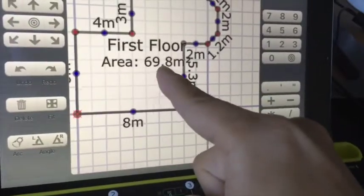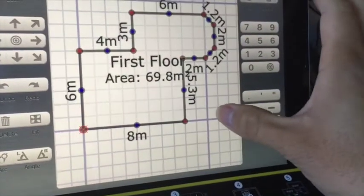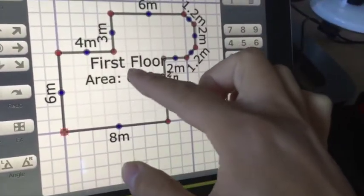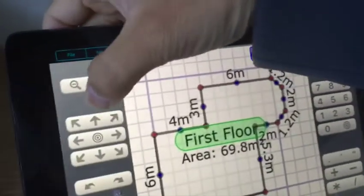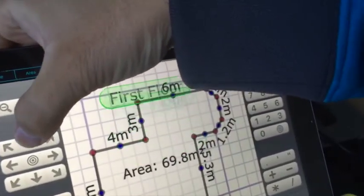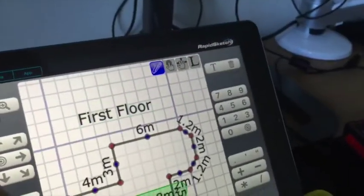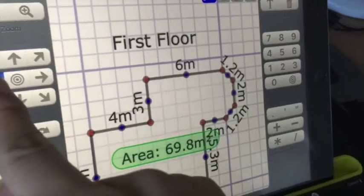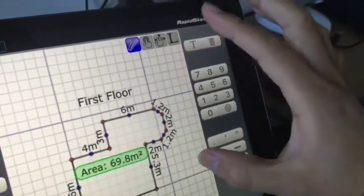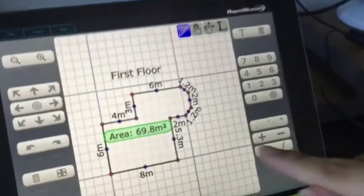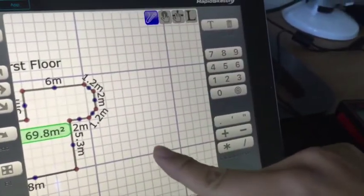You will have the area automatically calculated for you. So if you see this is too big, you can just move this upward. And you have the area here. First floor done. Then you can move to the upper floor.